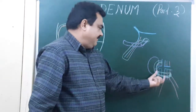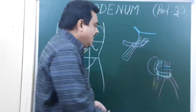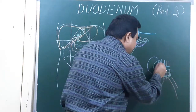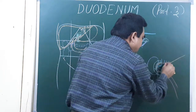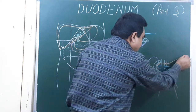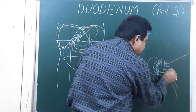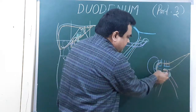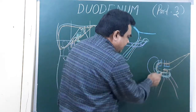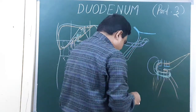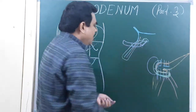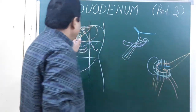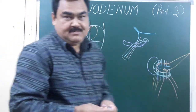So this is the anterior relation and this is the posterior relation. Superiorly, here is the position of the head of the pancreas — the uncinate process and the body. Inferiorly, there are coils of intestine present. These are all the structures related to the third part of the duodenum. Thank you.